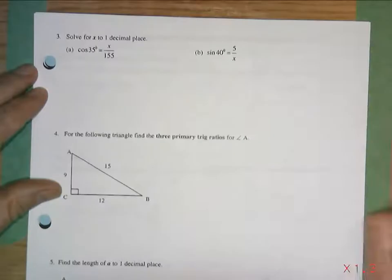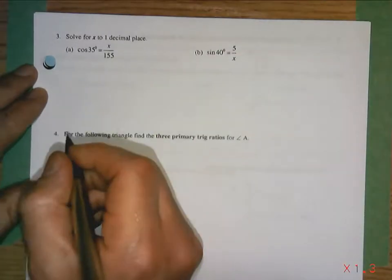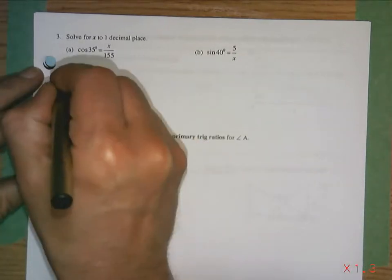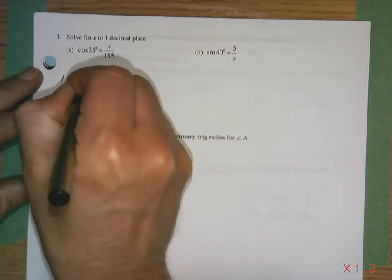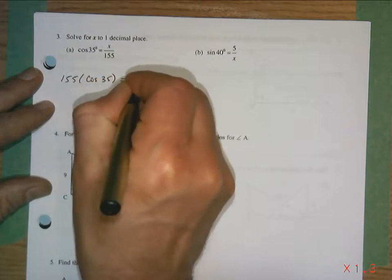So we're going to treat it like a number. I'm going to look at the x and say it's being divided by 155. The opposite of division by 155 is multiplication. So 155 times cos 35 is going to equal x.